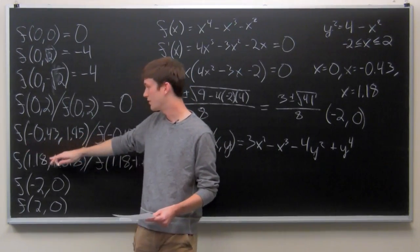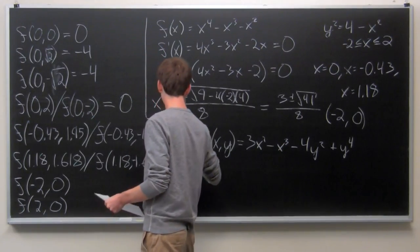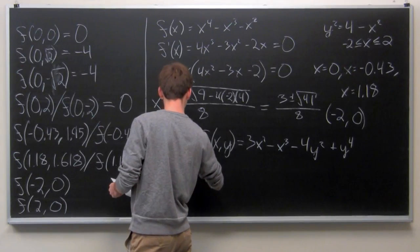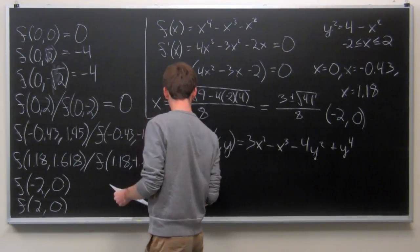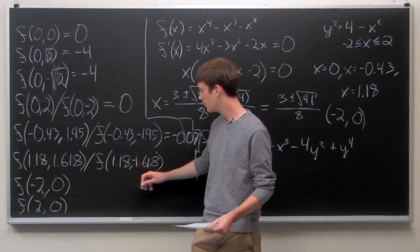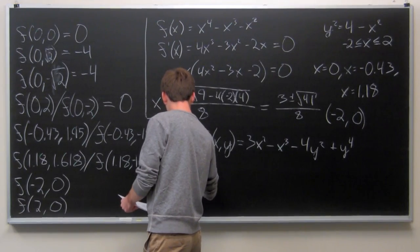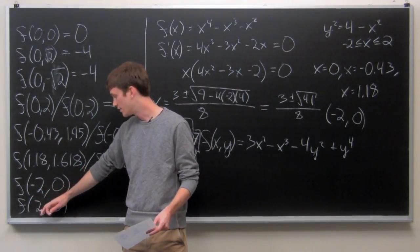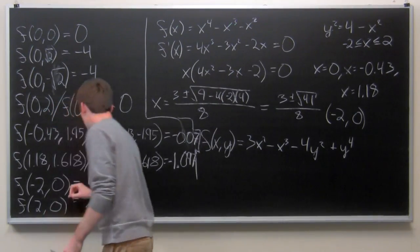Evaluating at all points: f(0, ±√2) is our corrected interior minimum value. f(0, 2) and f(0, −2) both equal 0. f(−0.43, ±1.95) ≈ −0.07. f(1.18, ±1.618) ≈ −1.097. And finally, f(−2, 0) = 4 and f(2, 0) = 20.